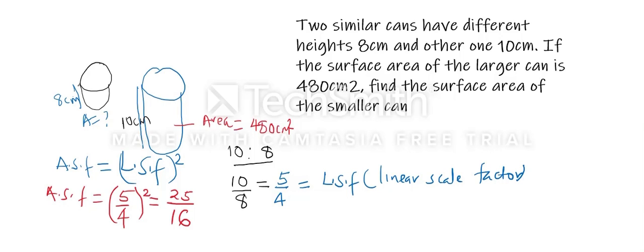The numerator corresponds to the bigger area and the denominator corresponds to the smaller area. So this is equivalent to the bigger area — that is, the area of the larger can (480 cm²) — divided by the area of the smaller can, which we call x.